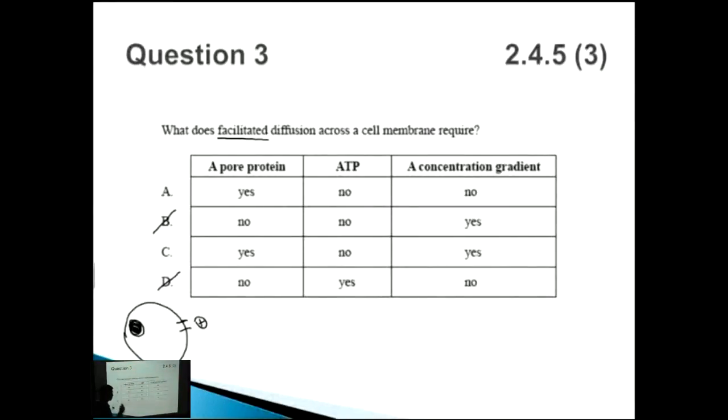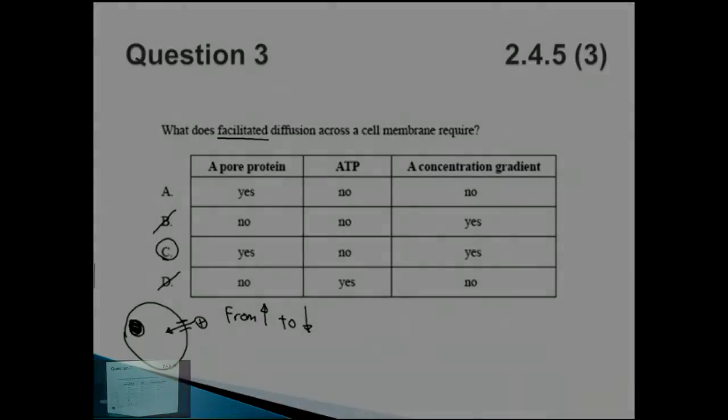Those are key points that you have to put into your section, your paper 2 section B answers. So you're going down the concentration gradient. So is there a concentration gradient? No. But actually yes. So it does require a concentration gradient. So yes. So the answer is C because you require the concentration gradient from high to low and that's the only way that the molecules will go from there down to there.